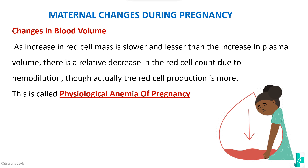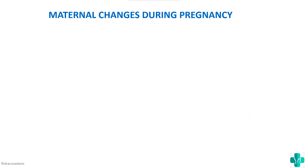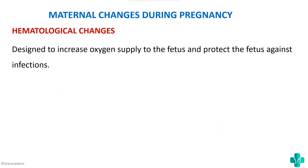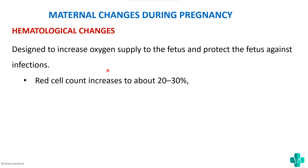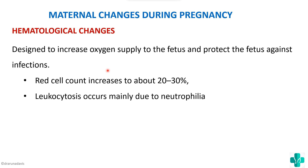In summary for blood volume: there is an increase in plasma volume, an increase in red cell volume, but also physiological anemia. The hematological changes exist because we need to increase oxygen supply to the fetus and protect against infection. The red cell count increases by around 20–30%, leukocytes also increase mainly due to neutrophilia, and platelet count remains almost normal.